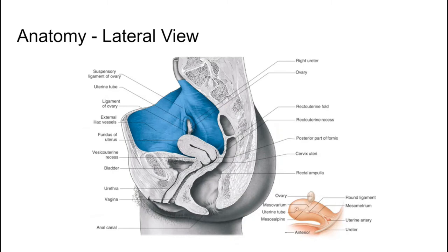It's useful to understand a lateral view because when you scan, the ultrasound is done in various different planes and some images will be in a lateral view. It's worth remembering that the vagina goes upwards and backwards towards the patient's back, and the uterus can be in various positions — anteverted, axial, or retroverted.